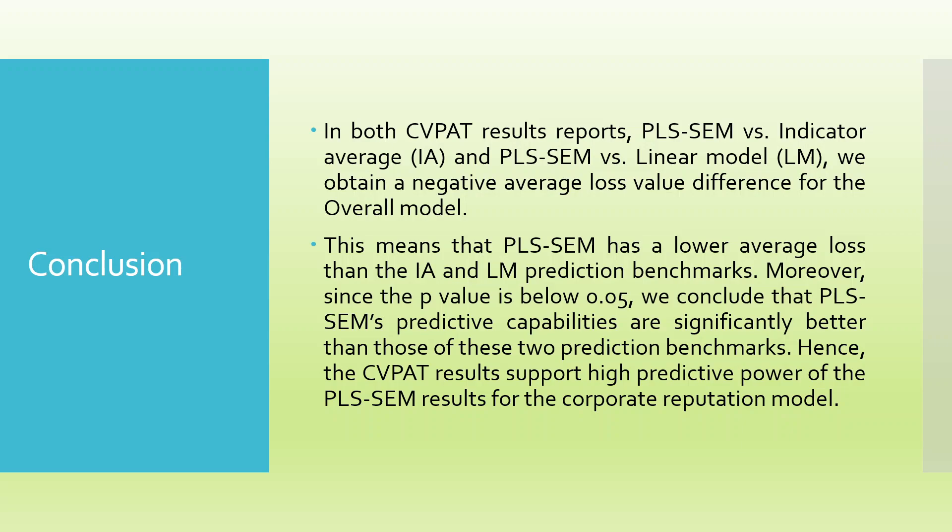In both CVPAD results — PLS-SEM versus indicator average and PLS-SEM versus linear model — we obtain a negative average loss value difference for the overall model. This means PLS-SEM has a lower average loss than the indicator average and linear model prediction benchmarks. Since the p-value is below 0.05, we conclude that PLS-SEM predictive capabilities are significantly better than those of the two prediction benchmarks. Hence, the CVPAD results support the high predictive power of the PLS-SEM results for the corporate reputation model.